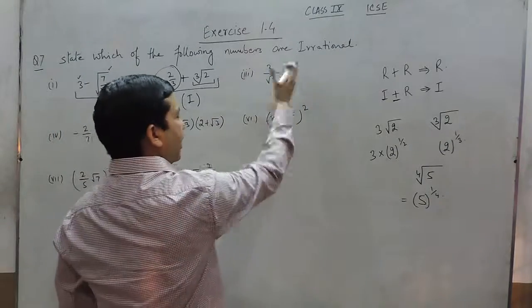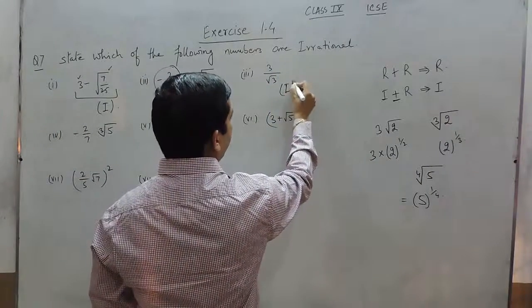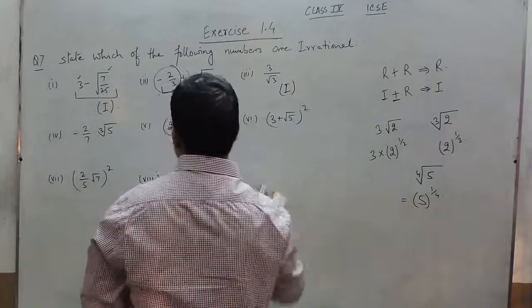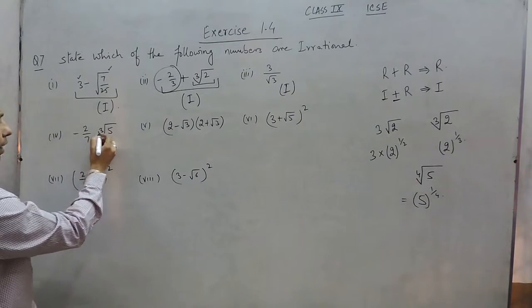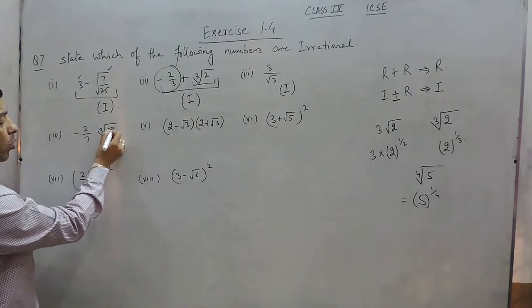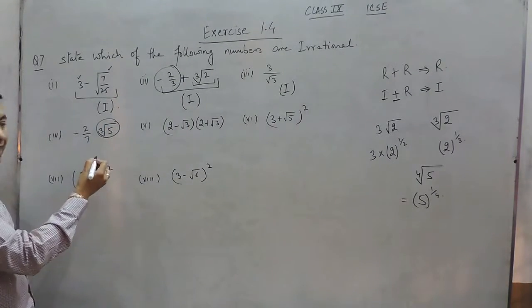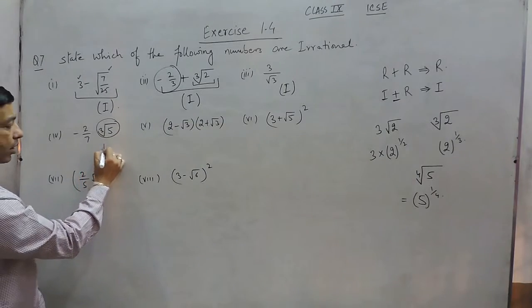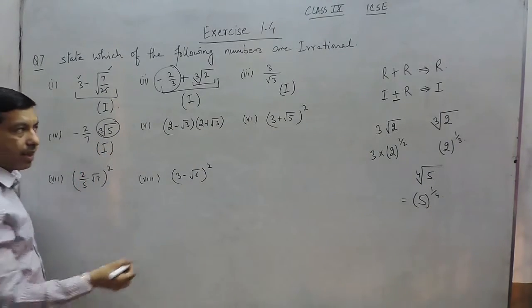Here it is √3, which is already an irrational number, so this is irrational. Here it is ∛5, which is also an irrational number, so this number is also known as irrational.